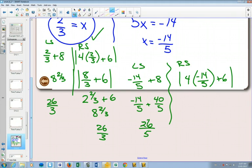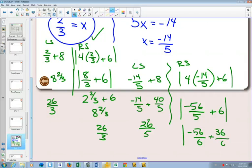And on the other side, when we plug it in, 4 times negative 14, I'll keep the absolute value bars. It will be 40 and 16, negative 56 plus 6. Get a common denominator, negative 56 over 6 plus 36 over 5.